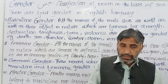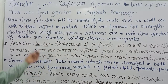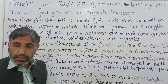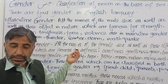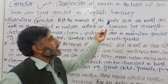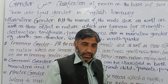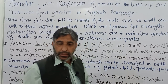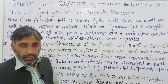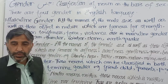Gender ki short definition yeh hai: classification of noun on the basis of sex. Classification means darajabandi. Jab hum kisi ism ki darajabandi karte hain on the basis of sex — ke uski jins kya hai, muzakkar hai, muannas hai, neuter hai, ya common gender hai — is buniyad par jo classification hoti hai, wohi gender hota hai.